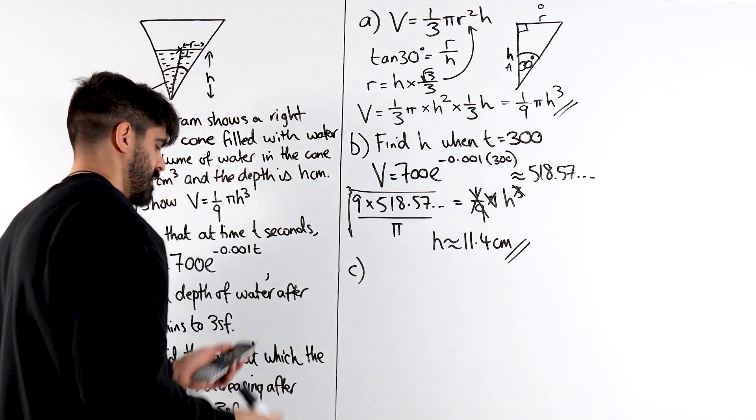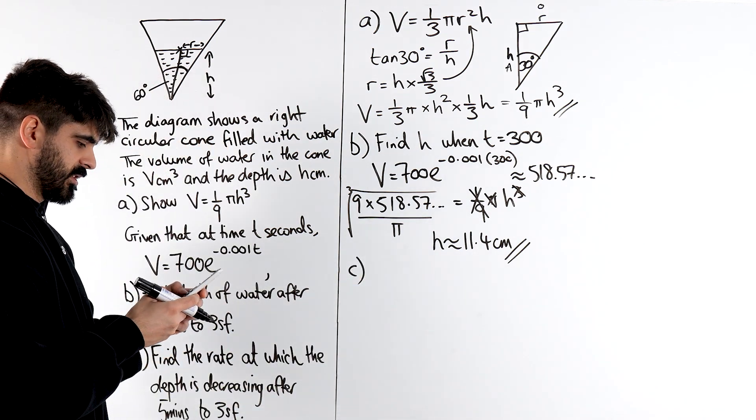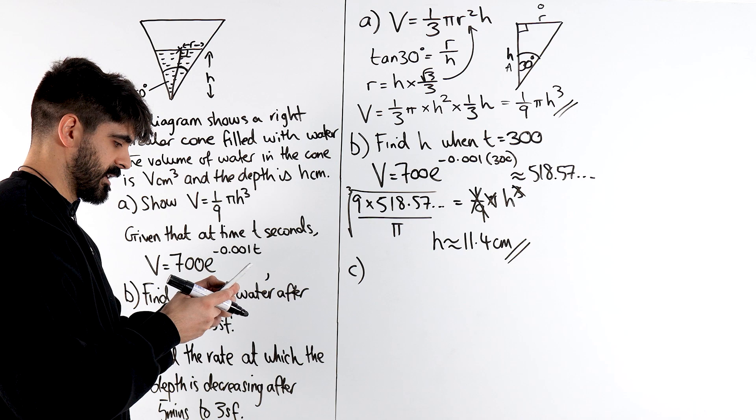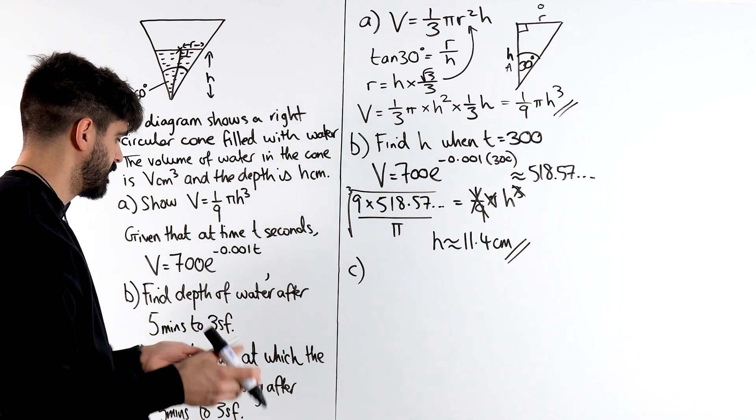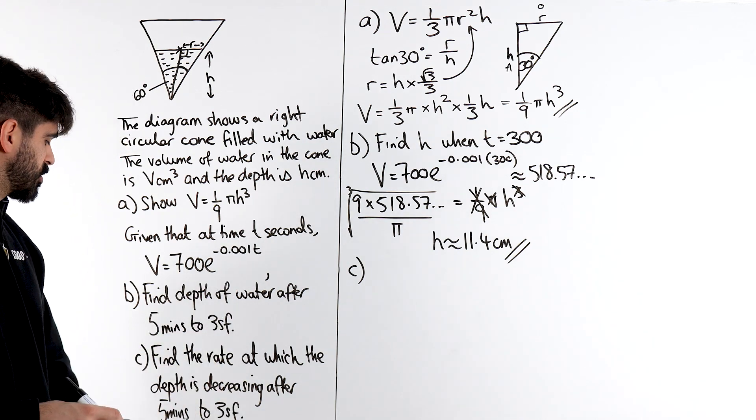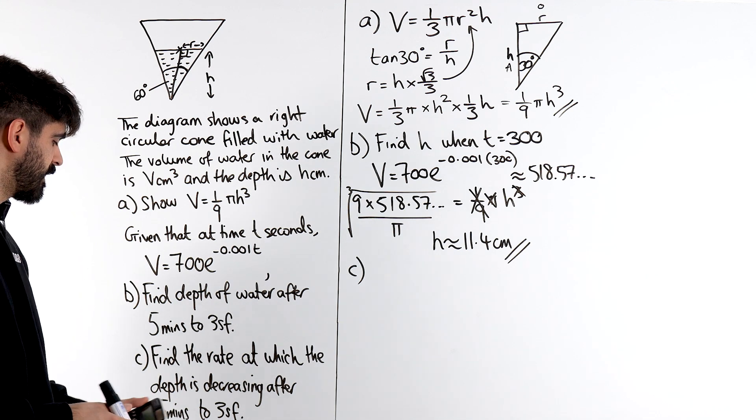Okay, what about part C? Well, I just need to double check my answer there. 9a over pi. I always get paranoid. Yeah. No problem.